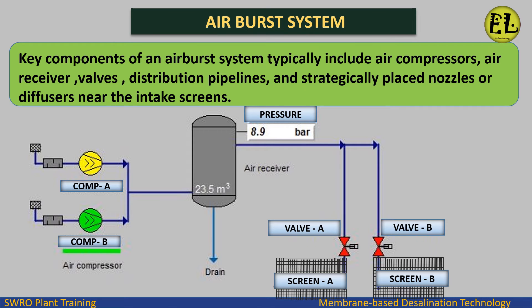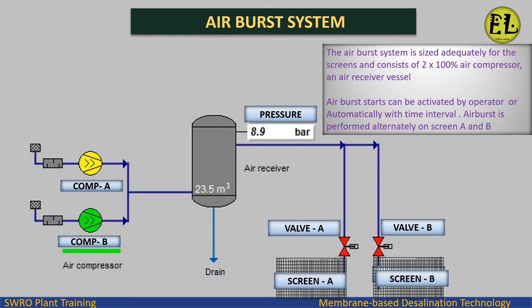Key components of an airburst system typically include air compressors, air receiver valves, distribution pipelines, and strategically placed nozzles or diffusers near the intake screens. The airburst system is sized adequately for the screens and consists of 2x100% air compressors and an air receiver vessel.